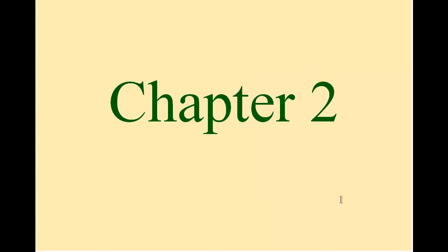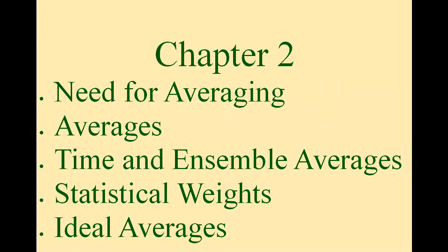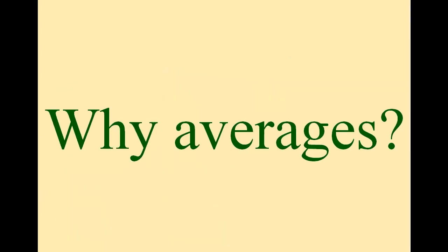Chapter 2: Statistics. This chapter considers the need for averaging, the nature of averages, time and ensemble averages, the importance of statistical weight, and the notion of the ideal average. Our first and simplest question is why we need to do averaging. What are the statistical random issues that arise, and why do these issues show up with physical systems?